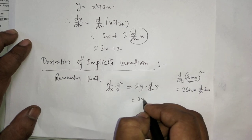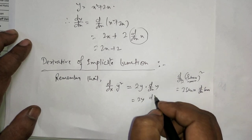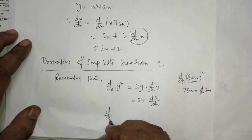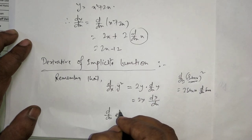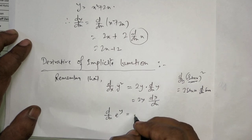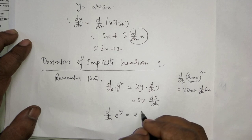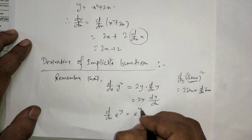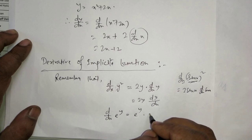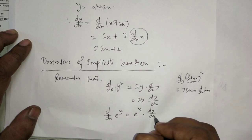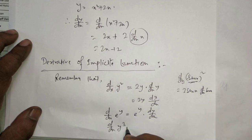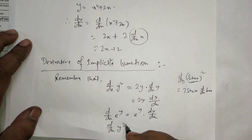It becomes 2y times d/dx of y, which means 2y times dy/dx. Similarly, d/dx of e to the power y: if you treat y as x, d/dx of e to the power x is e to the power x. So d/dx of eʸ becomes eʸ, and since y and x are different, we multiply again by dy/dx.